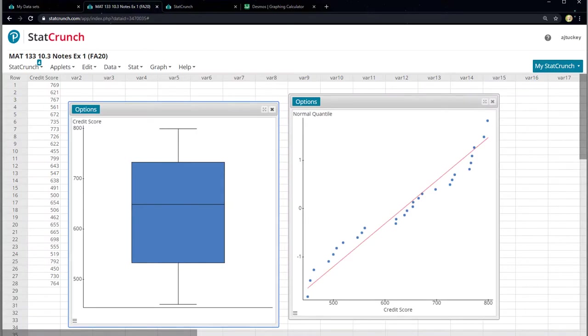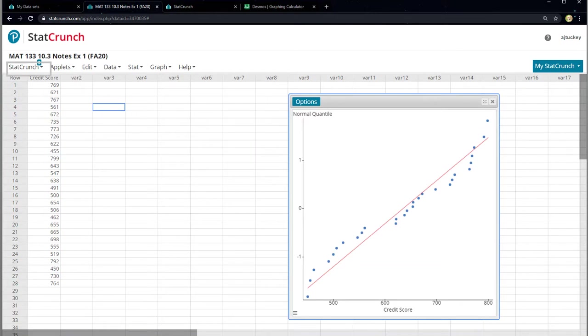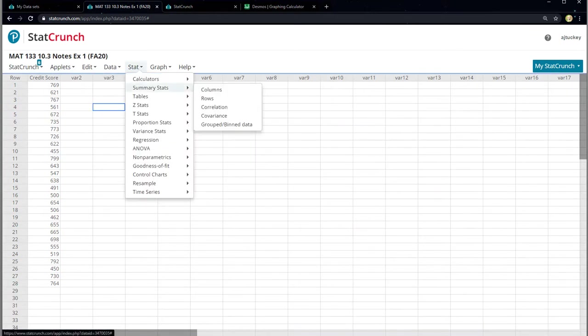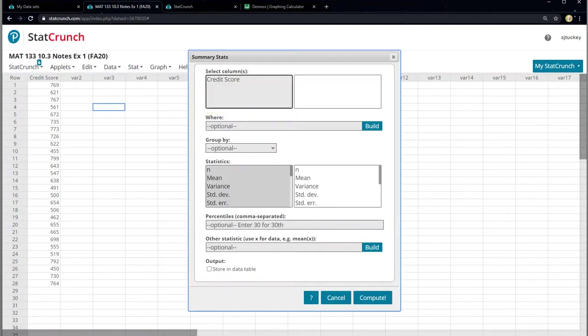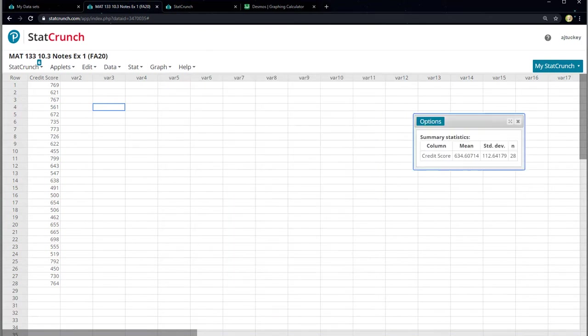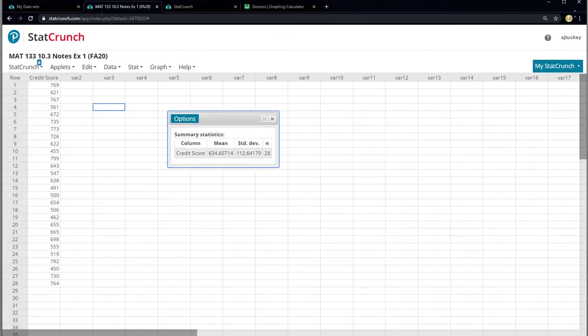If I go back to StatCrunch and I close down these graphs that I don't need to see anymore, and I go to Stat, Summary Stat, Columns. It's been a long time. It's good to review. And I click Credit Score. I really need the mean and the standard deviation. And n doesn't hurt me. I might as well throw n in there for fun. But I need the x bar and the s. And that's what mean and standard deviation are. So when I click Compute, it'll tell me, right there, the mean is 634.6. The standard deviation is 112.6. So I'm going to write those values in. 634.6 goes in the numerator. And 112.6 goes in the denominator.